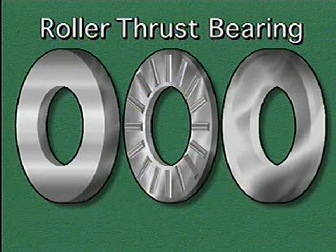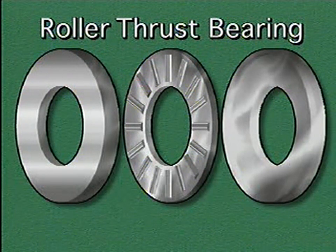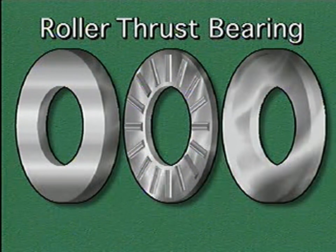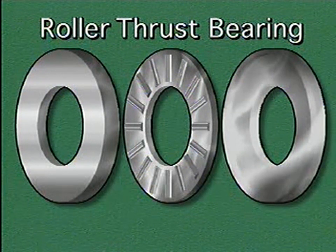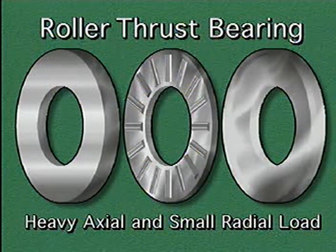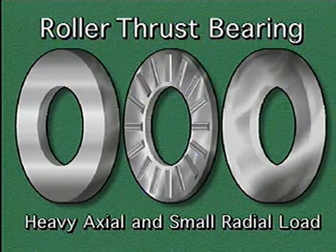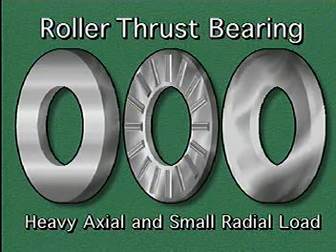This illustration represents the construction of a roller thrust bearing. In a roller thrust bearing, the rings are parallel to each other instead of one inside the other. Roller thrust bearings are used to support heavy axial loads, but only a small amount of radial load.